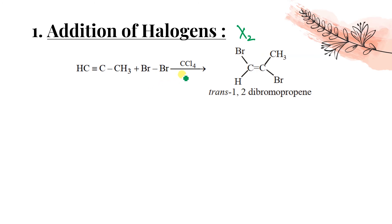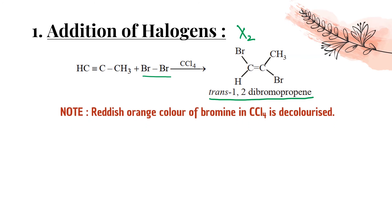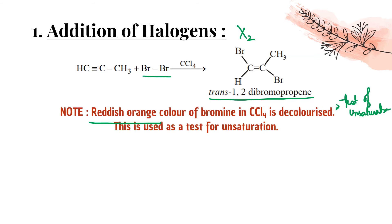Addition of halogens (X₂): with Br₂ in presence of CCl₄, one pi bond breaks and the two Br atoms attach to adjacent vicinal carbons — giving trans-1,2-dibromopropene as the trans product. This is stereospecific. This reaction decolorizes the reddish-orange color of bromine in CCl₄, and is therefore used as a test for unsaturation.